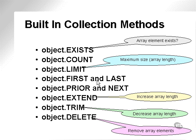The limit is the maximum size of an array. First and last is the first and last object. Prior and next are methods which can be used to scroll through the objects declared.